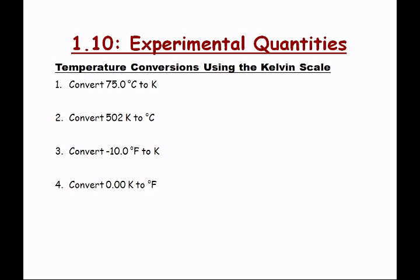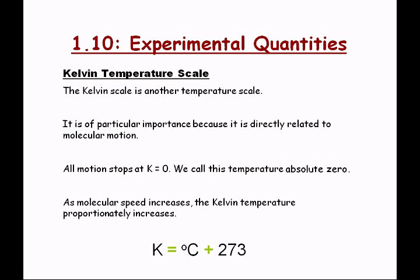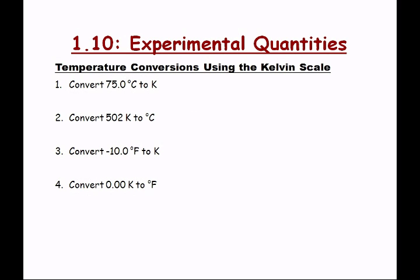Most of the calculations you do in this class will depend on the absolute temperature, so I want you to get a really good feel for it. The cool thing about the Kelvin scale is that the degrees are exactly the same magnitude as the Celsius scale — they're only off by 273. Water freezes at 273 degrees above absolute zero, and water boils at 373 Kelvin — that is, above absolute zero.